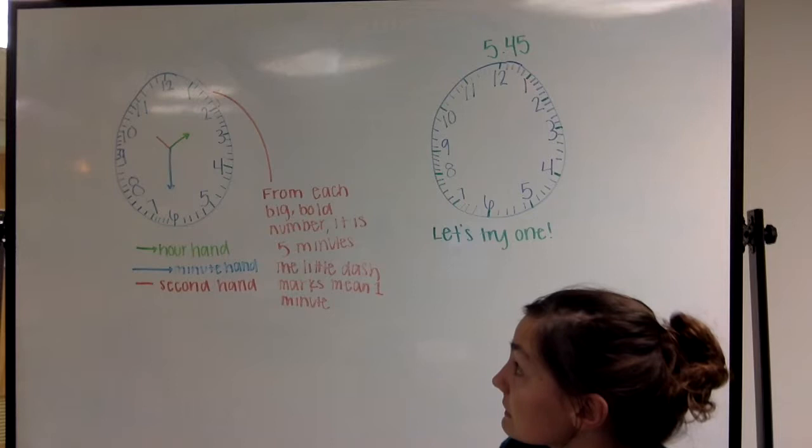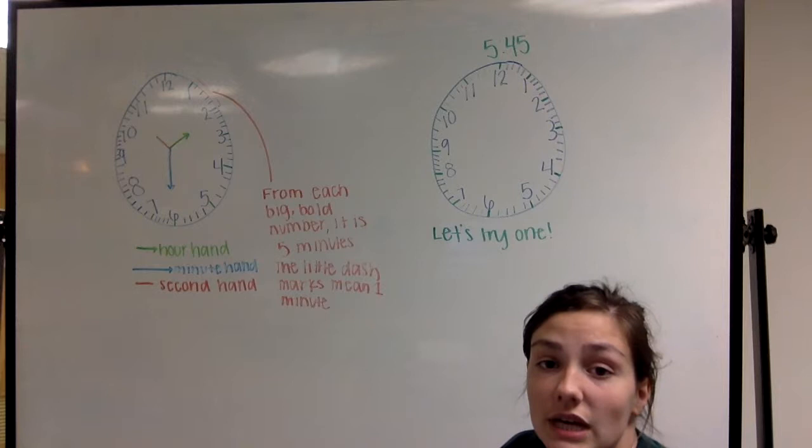So this clock says 2:30. The green hand is pointing at the two, and the blue hand is pointing down to the six, which is the 30.